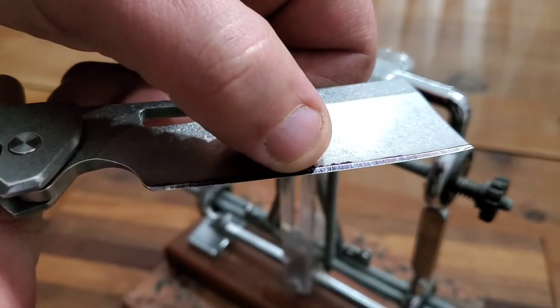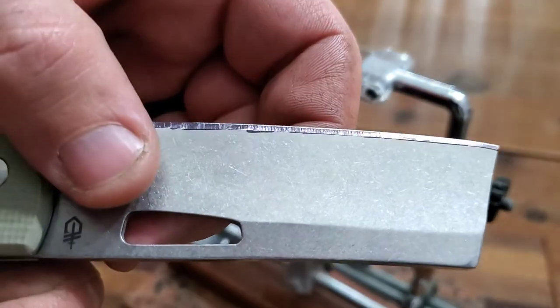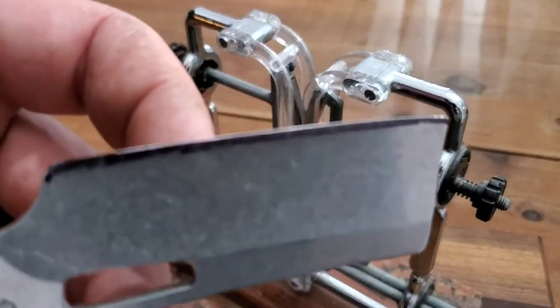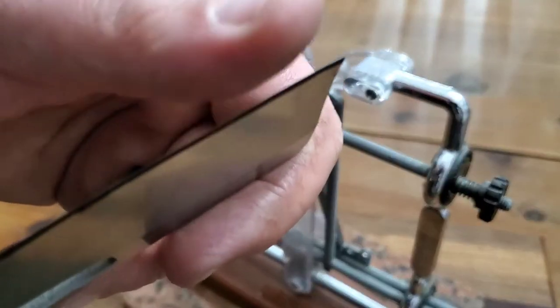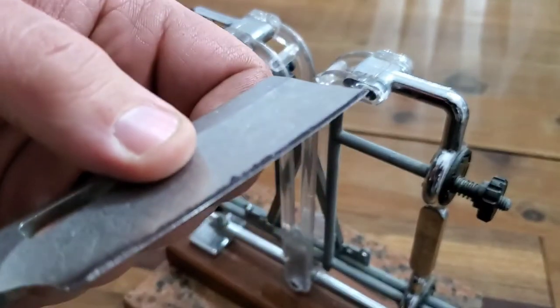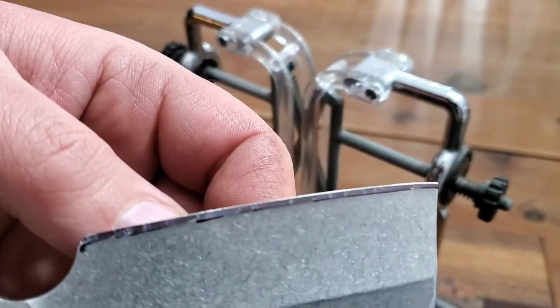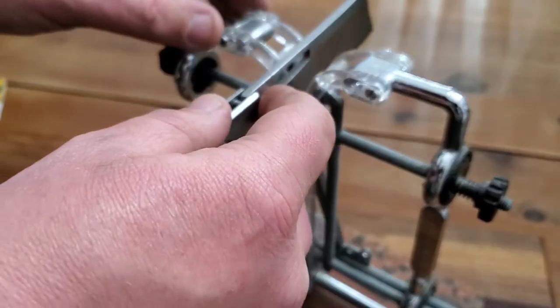Which means this angle on this sharpener is wider or steeper than the angle that's actually on this knife. That's why we put the little Sharpie on there. It tells us that right away.